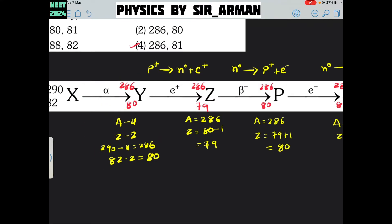In the second process, a positron is coming out. Whenever a positron is coming out, it means a proton decays into a neutron and a positron. The positron comes out from the nucleus while the neutron resides in it. The number of protons decreases and the number of neutrons increases, but the total number of nucleons remains the same. So the mass number stays at 286, but a proton is converted into a neutron, so the atomic number decreases by 1 — the new atomic number is 79.